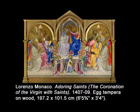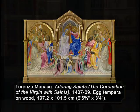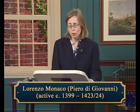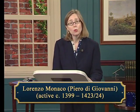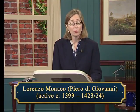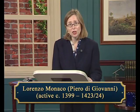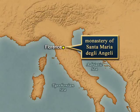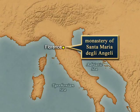A fine example of the style is Lorenzo Monaco's Coronation of the Virgin with Saints from 1407 to 1409. Lorenzo Monaco, active around 1399 till his death around 1423-24, was born Piero di Giovanni. He took the name Lorenzo on becoming a monk in 1391 at the monastery of Santa Maria degli Angeli in Florence. Monaco simply means monk. He later lived outside the monastery but continued to work for it, providing them with the altarpiece for the high altar of the monastery's church.